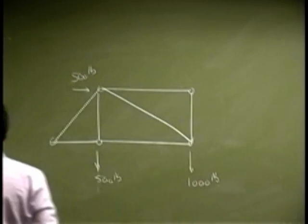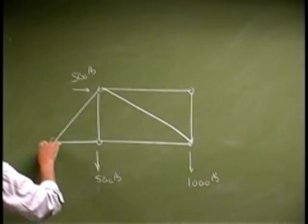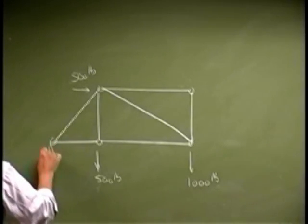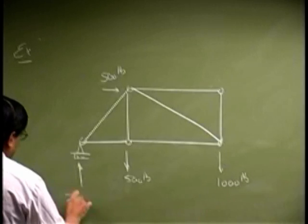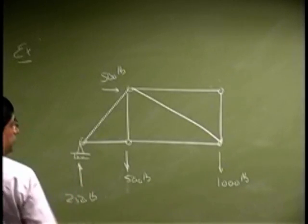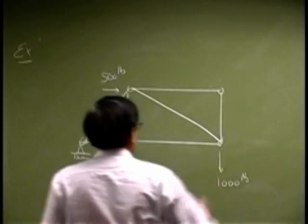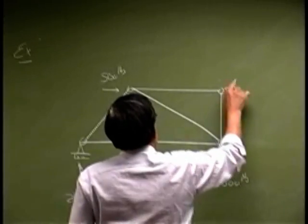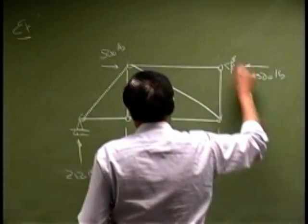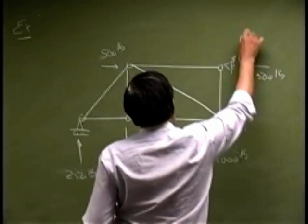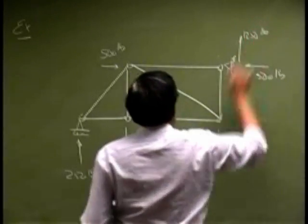And then we had the forces due to reactions. There was a roller here that gives a reaction of 250 pounds. Then there was a hinge here that gave us a reaction of 500 pounds, and a reaction here of 1250 pounds.